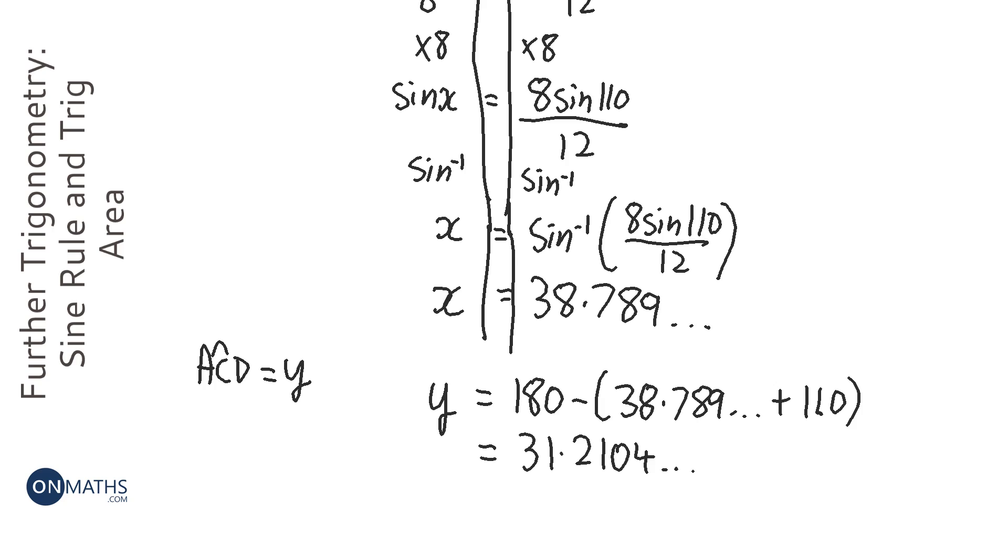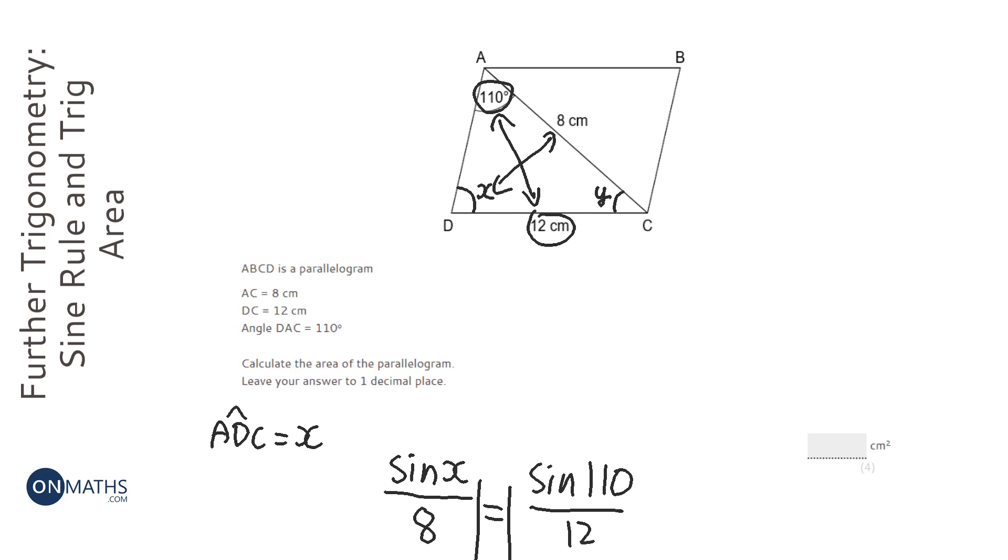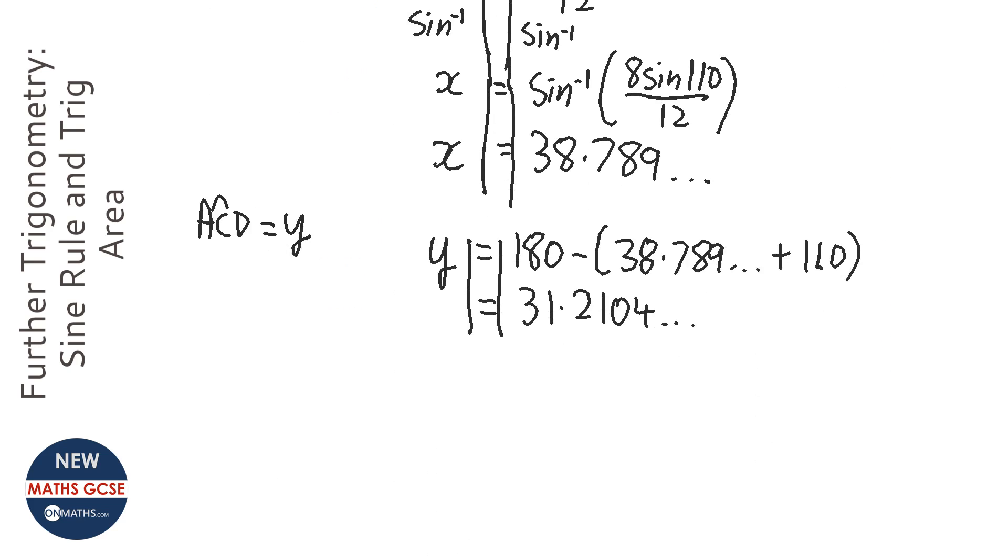So that tells me that Y is 31.2104 blah blah blah. OK, so I've worked out what Y is, which is good. Because when you have a length, then an angle, then a length all together, then you can use the trigonometric area formula. And the formula is dead easy.